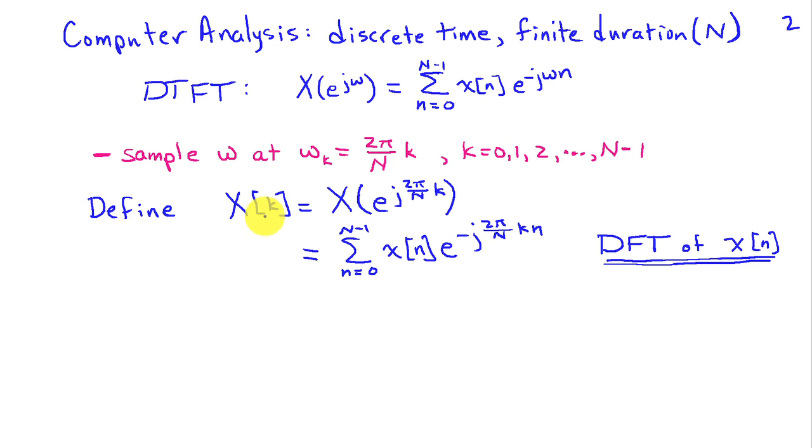And we'll define x bracket of k because now we're talking about something that's a discrete valued independent variable k is going to be the DTFT evaluated at those particular frequencies. And we can write that expression down. And this is known as the DFT or discrete Fourier transform. It's just a sum from n equals 0 to capital N minus 1 of x of n e to the minus j 2 pi over capital N n times k times lowercase n. And those are a series of frequency domain values that correspond to samples of the DTFT.